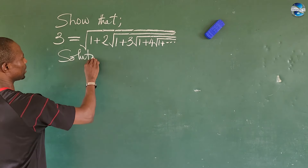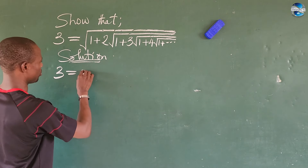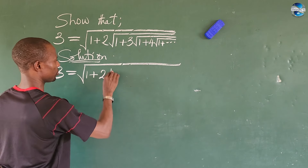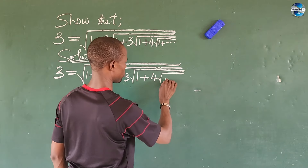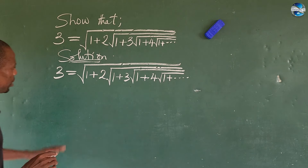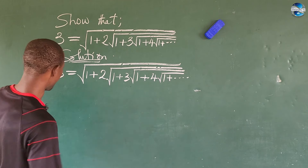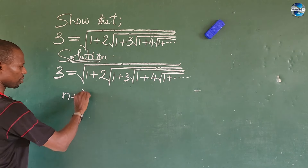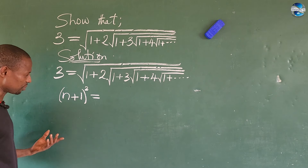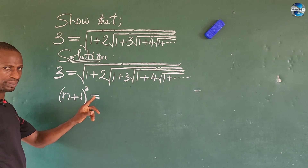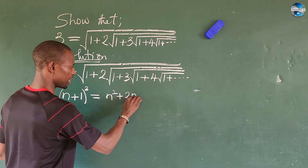So here we take the solution. Now, from this expression we have here, we have 3 equal to the square root of 1 plus 2 into the square root of 1 plus 3 into the square root of 1 plus 4 into the square root of 1 plus da-da-da. The first thing I'm going to do here is to relate this expression to our binomial series. So if we have (n+1) all to the power of 2, how do we expand this? From our Pascal's triangle, the coefficient is going to be 1, 2, 1. So if we expand this, this will give us n² plus 2n plus 1.